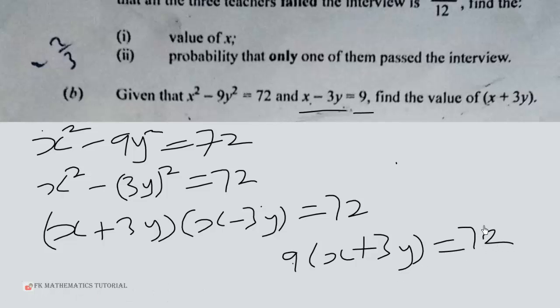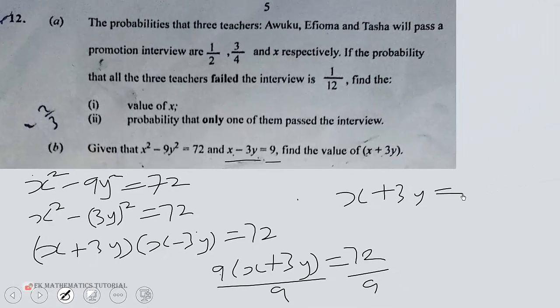So x plus 3y, divided through by 9, will give us x plus 3y to be equal to 72 divided by 9, and that will give us 8. So x plus 3y is equal to 8.